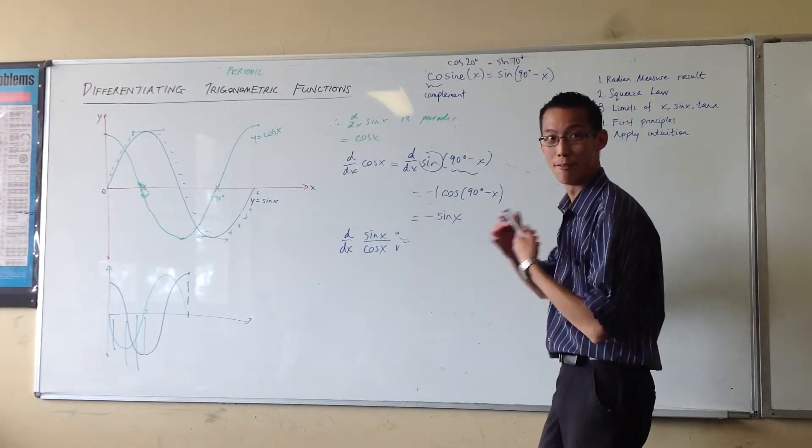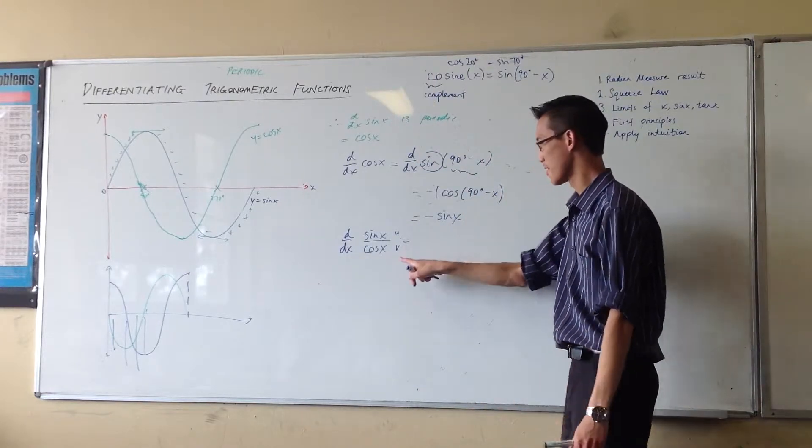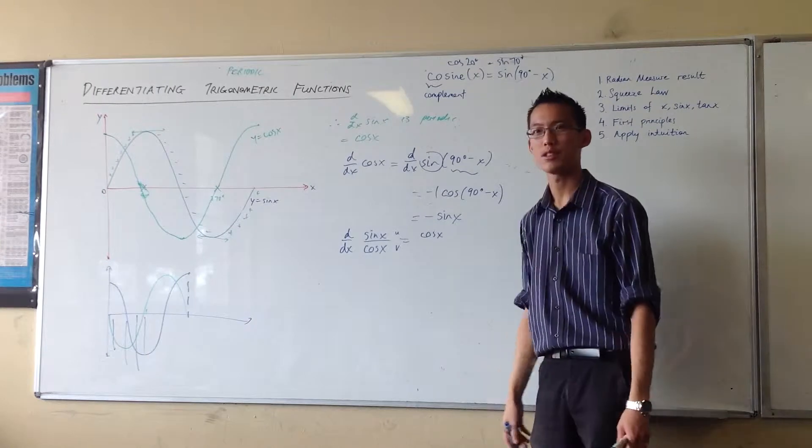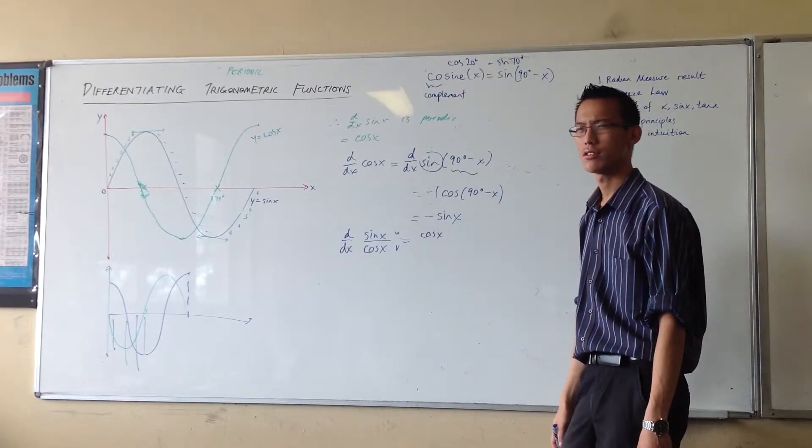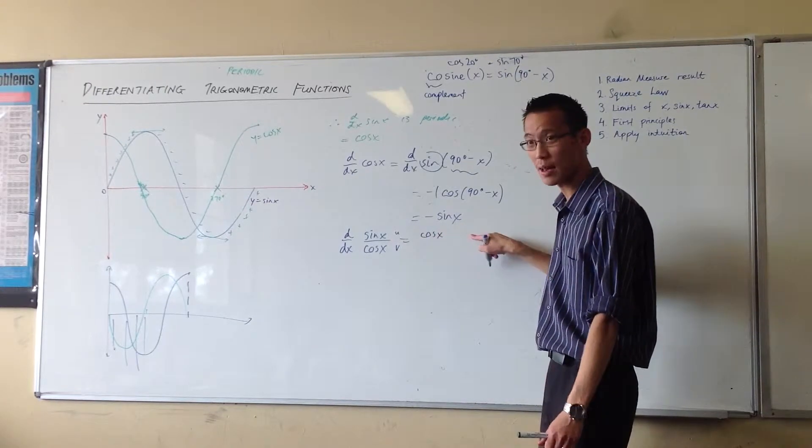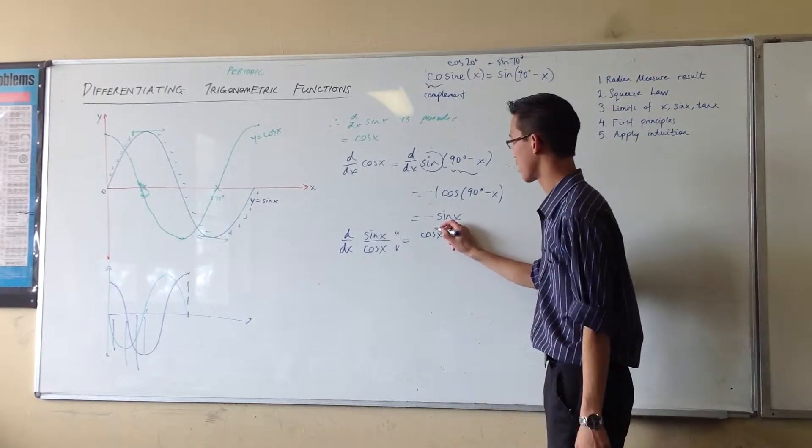Let's do our v du minus u dv on v squared. How good are we at this? V, which is cos x, times u dash. What is u dash? This is u, so u dash is just cos x. So cos x times cos x is cos squared x.